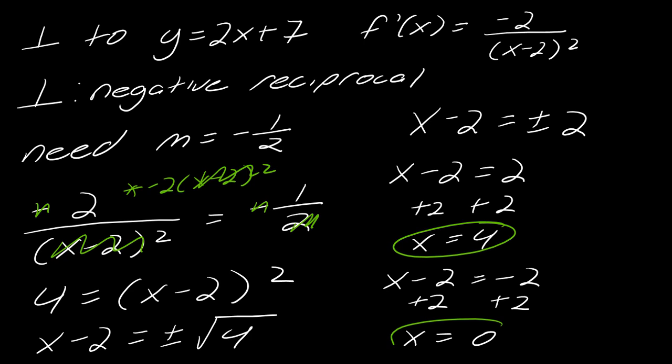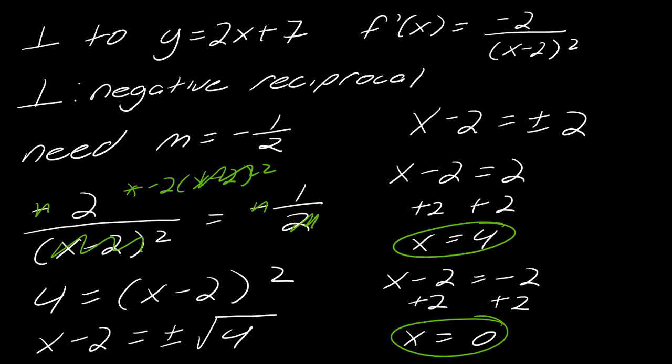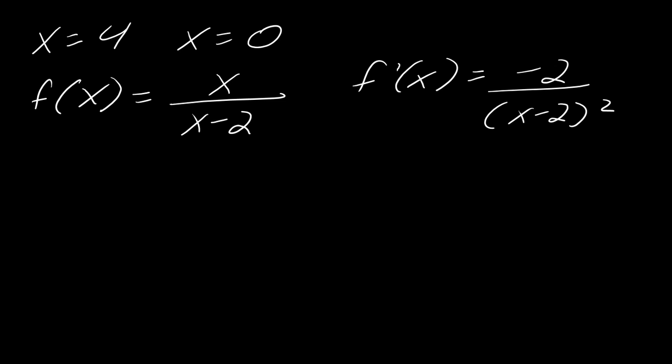Okay, 4 and 0. Am I done? Let's read this again. Find all points. Not quite. I have the x coordinates. I don't have the points. So now I just need to take those two x values. So I'll take a little more space. Okay, so now I've got these x values and I've got these two functions.